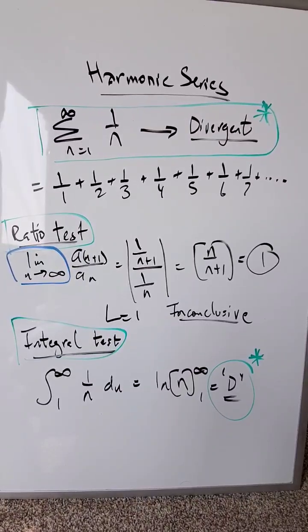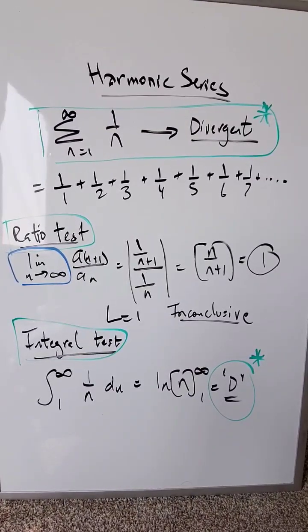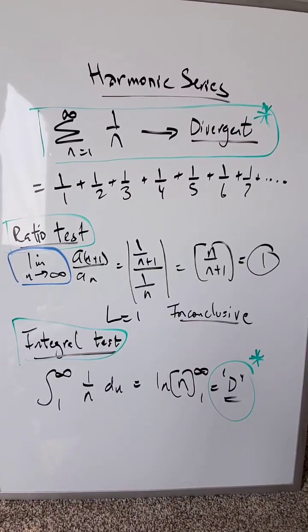The harmonic series is an interesting series to examine. It has the rule represented at the very top: n equals 1 up to infinity, 1 over n.